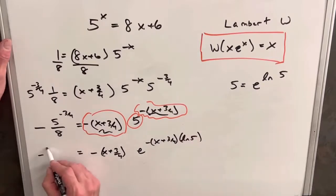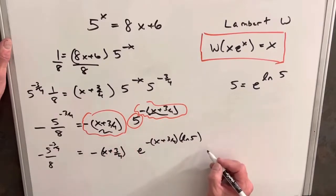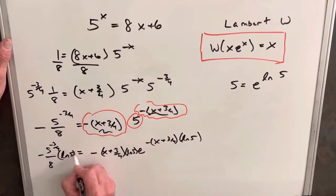And on this other side, we're going to have minus 5 to the negative 3 fourths over 8. You know, I kind of did that too soon. So we want to make this match again, so we need to multiply by an ln 5. We'll just squeeze it in right here, and we'll do the same thing over here, multiply an ln 5.